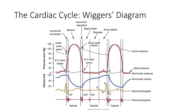Next we'll dive into Wigger's diagram — we're going to cover this before getting into pressure-volume loops because understanding it will make everything simpler. On the diagram we have several plots: at the bottom, the ECG and phonocardiogram. Don't worry too much about the phonocardiogram or heart sounds right now. Let's focus on the electrocardiogram, the ventricular volume curve, ventricular pressures, and the aortic and atrial pressures.